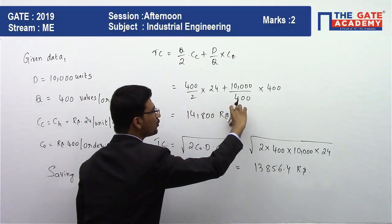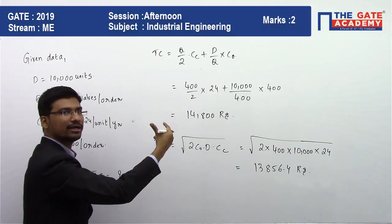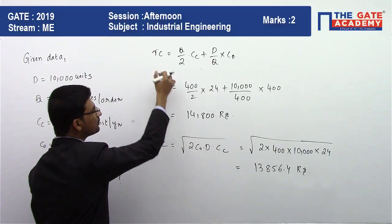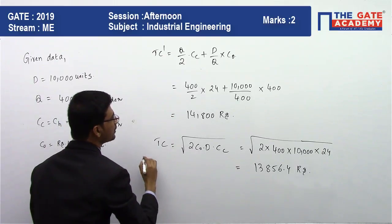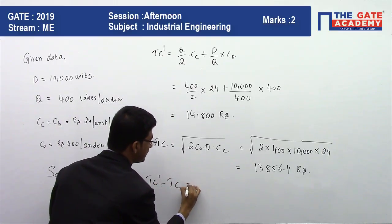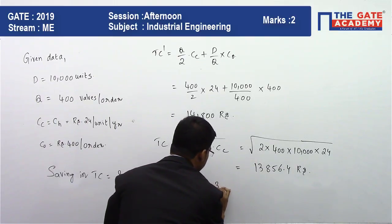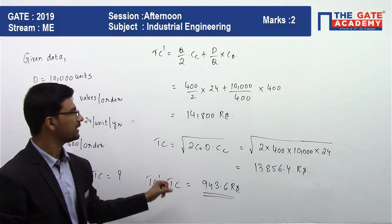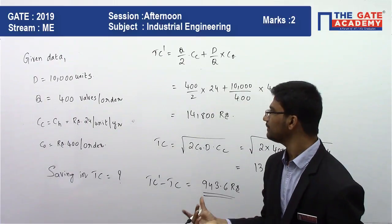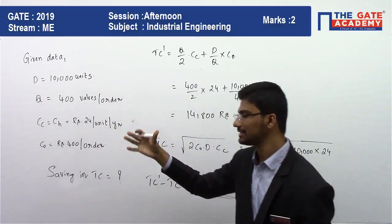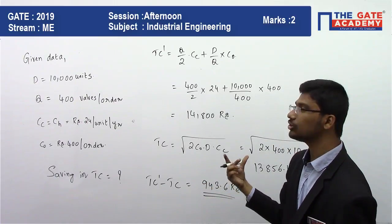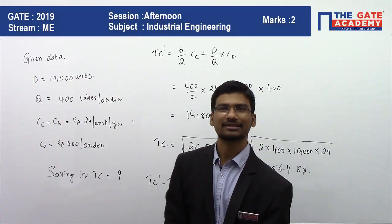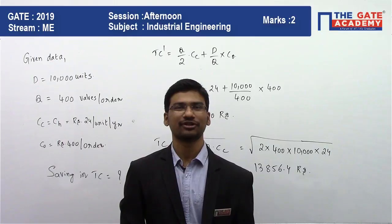The total cost at quantity 400 is higher since it is not the EOQ. At EOQ we get the minimum cost. The difference is 14,800 minus 13,856.4, giving a saving of rupees 943.6. This is a numerical answer type question, and the correct answer is 943.6. Hope you liked this video — please like and share. Thank you.